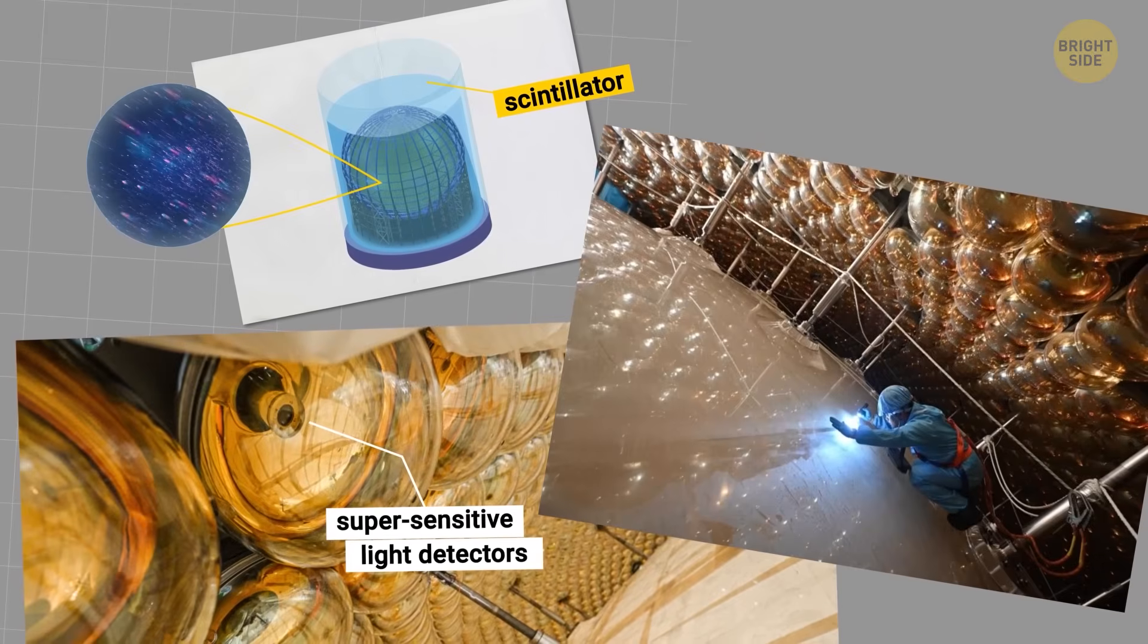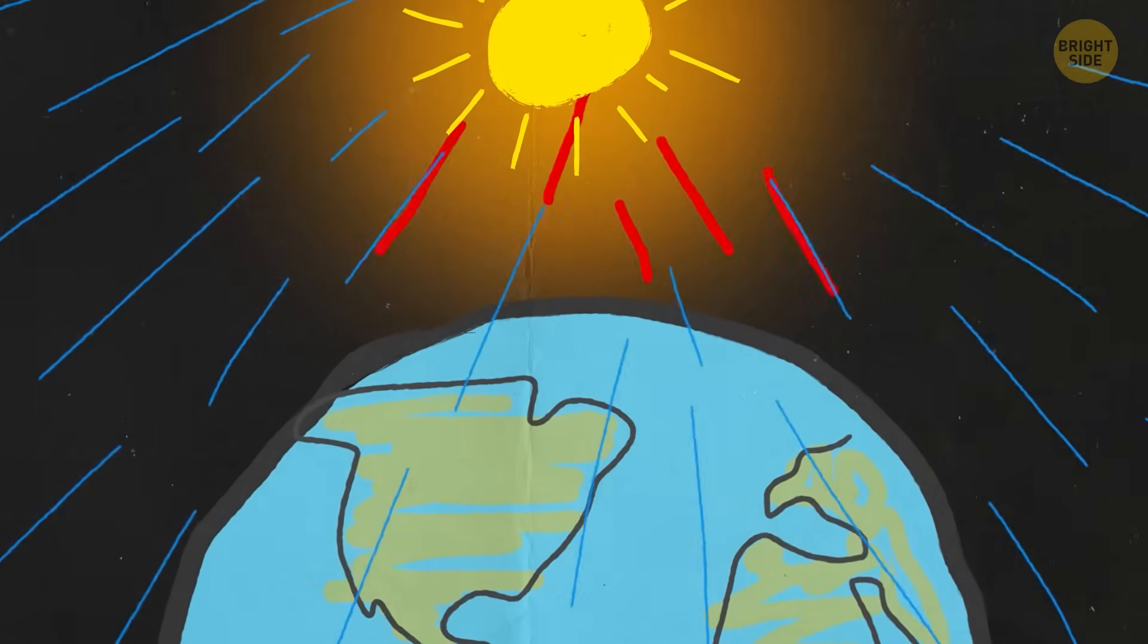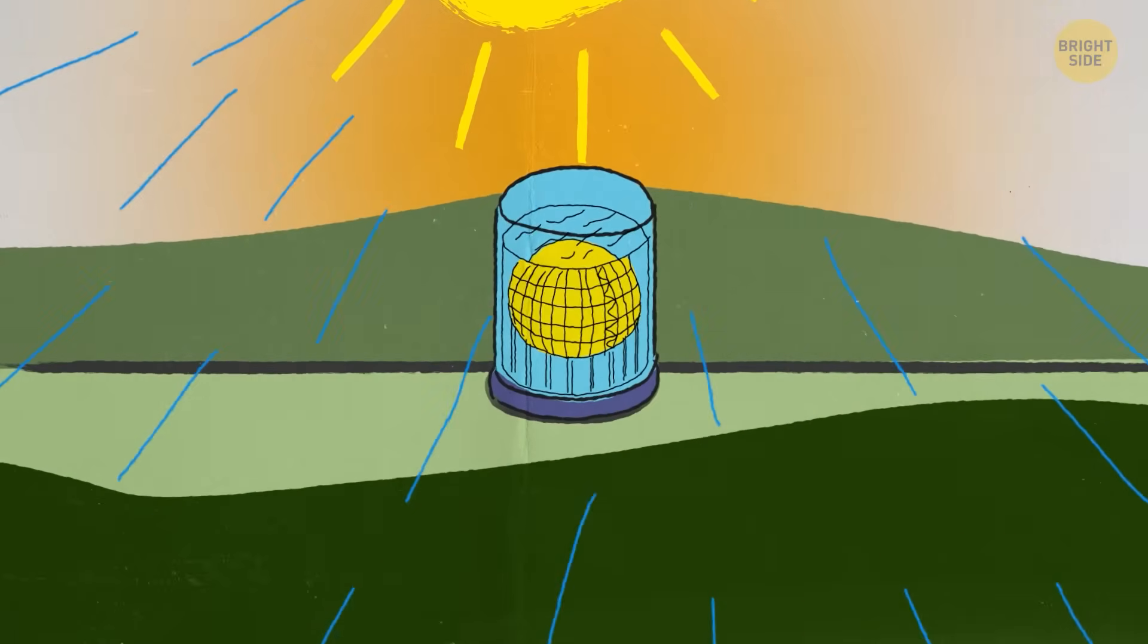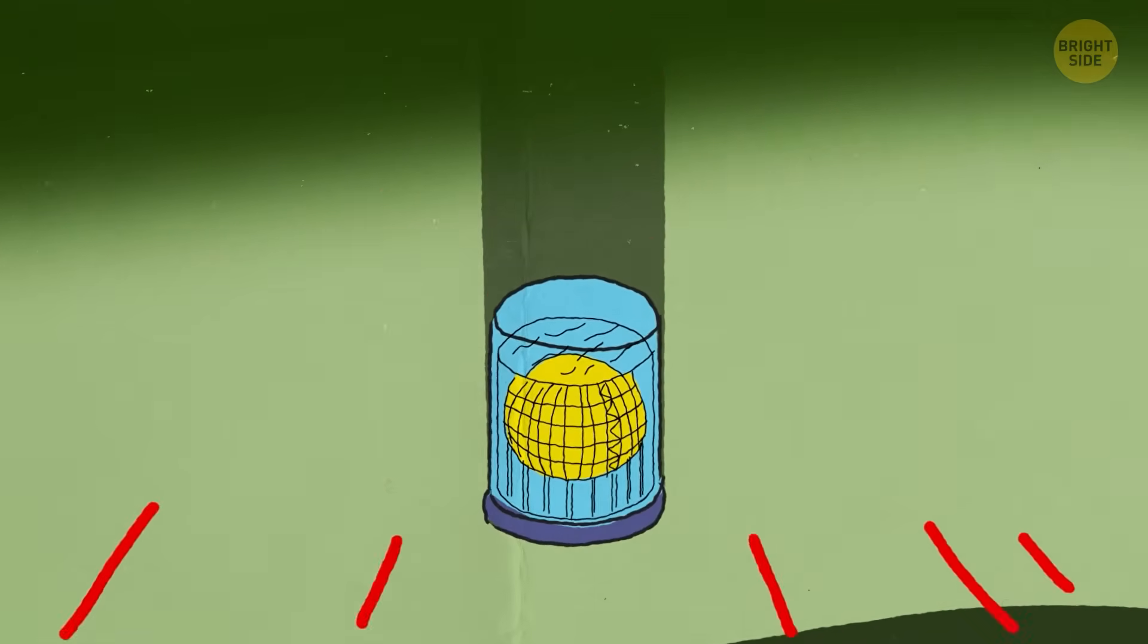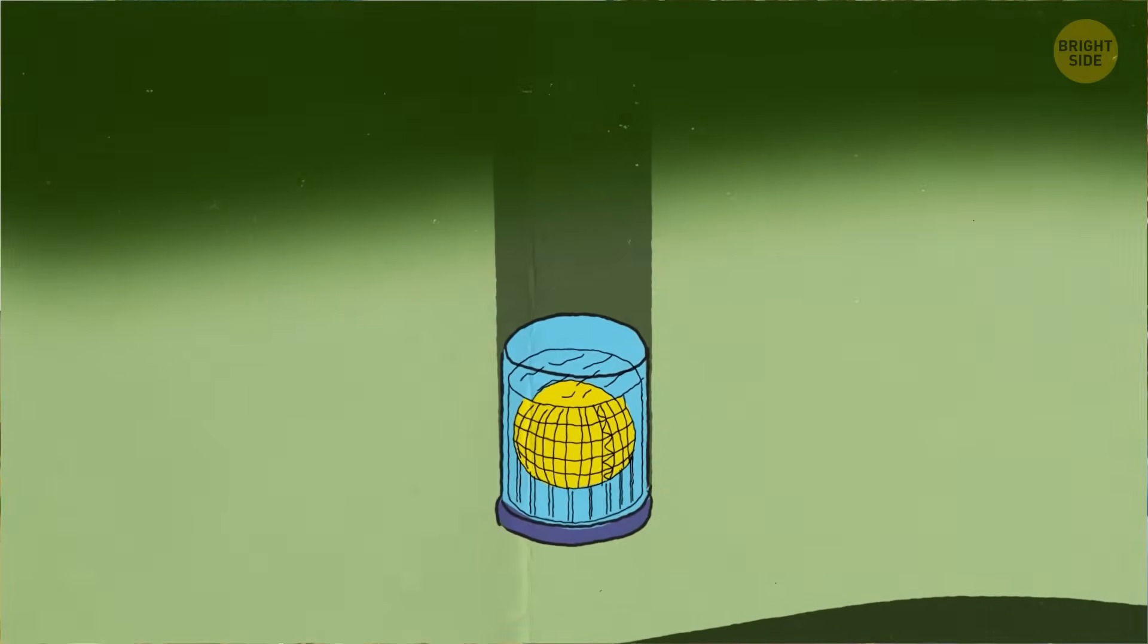Why build it underground, you may ask? Well, cosmic rays and other background particles constantly collide with Earth, and they would overwhelm the sensitive detectors if Juno was built at the surface. By hiding it under hundreds of feet of rock, scientists can block most of this noise, allowing them to focus on neutrinos.